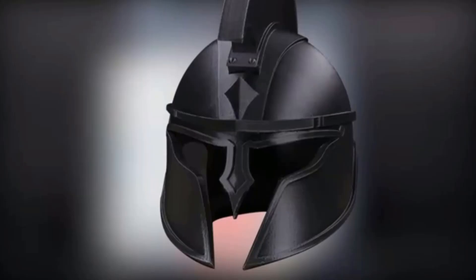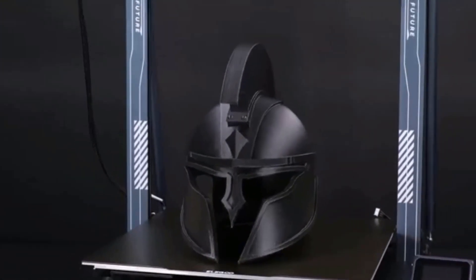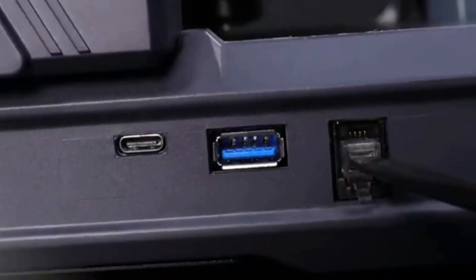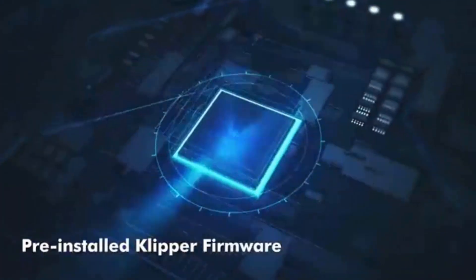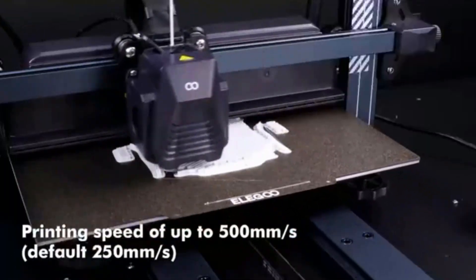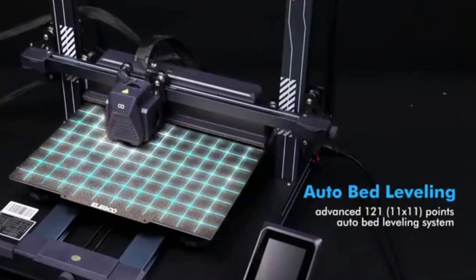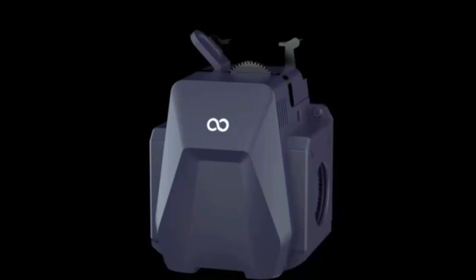Assembly is required but straightforward. The strengths of the Neptune 4 Plus make it easy to recommend as an editor's choice-winning budget 3D printer for hobbyists, as well as an excellent option for beginners who are willing to roll up their sleeves. Just be sure to buy a filament spool or two when you purchase the printer, or buy it as part of a bundle, as the base model doesn't include any filament.